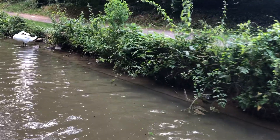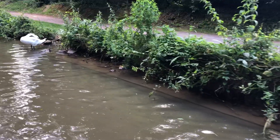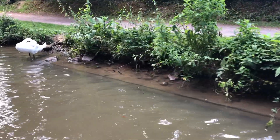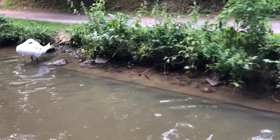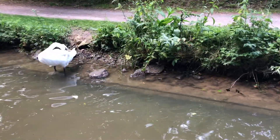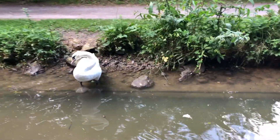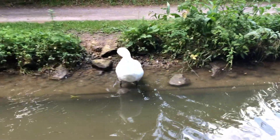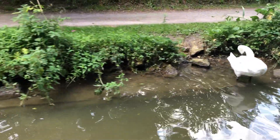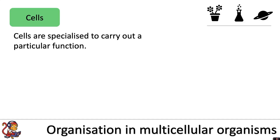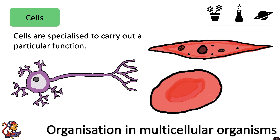Living organisms such as plants and animals are highly structured systems. In this video we're going to look at the levels of organisation in multicellular systems, starting at the cellular level. The first level of organisation is cells. Cells are specialised to carry out a particular function, and in a previous video we looked at some of these specialised cells.